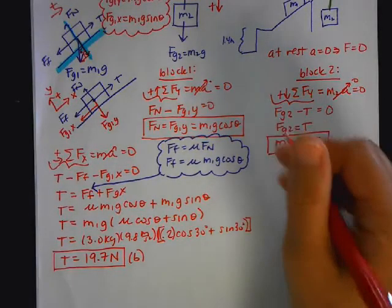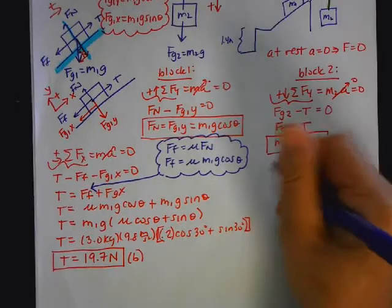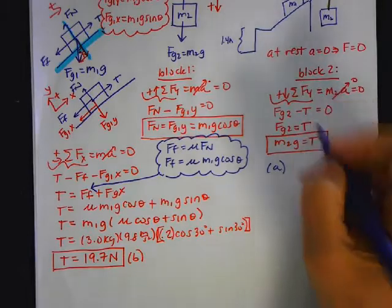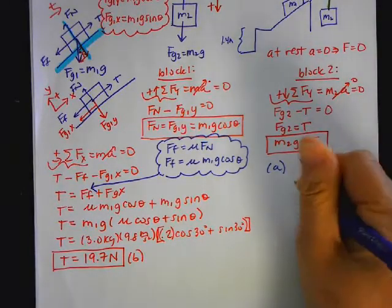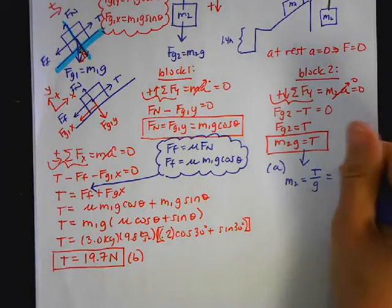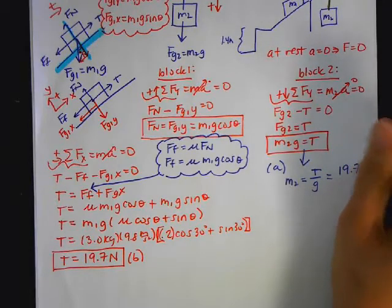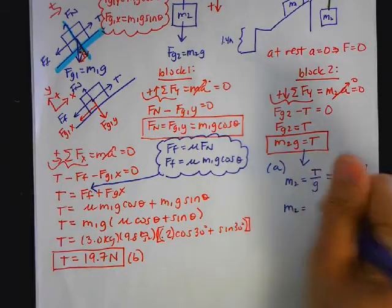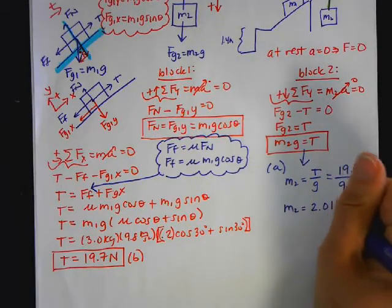Now I can go back and I can do part A, and part A says find the mass. So from here, I know that M2 is equal to T over G, which would be 19.7 newtons over 9.8 meters per second squared. So M2 is equal to 2.01 kilograms.